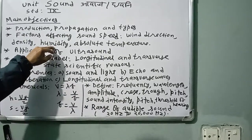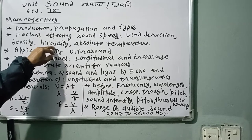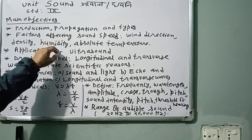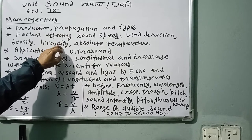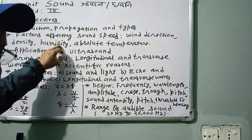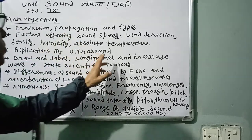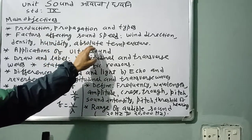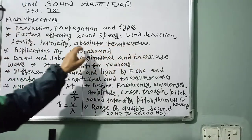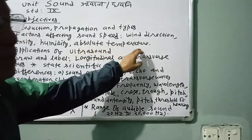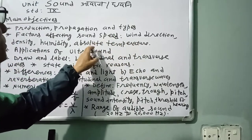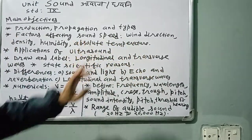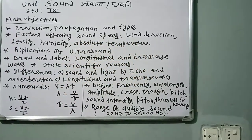More humidity means more sound speed; less humidity means less speed. In the daytime, humidity is less so sound speed is less, while at night humidity is more so sound speed is also more — much higher than in the daytime.